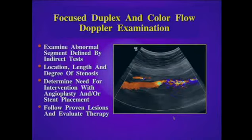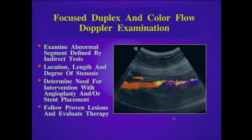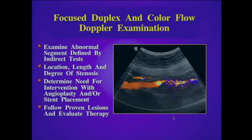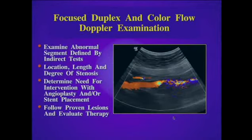Many times we prefer to do a focused duplex and color flow Doppler examination to examine the abnormal segments defined by our indirect tests. This allows us to determine the location, length, and degree of stenosis suggested by those indirect studies. We can also use the examination to help determine the need for intervention with angioplasty and/or stent placement, and follow patients treated with angioplasty or stent placement and follow the progression of known disease.